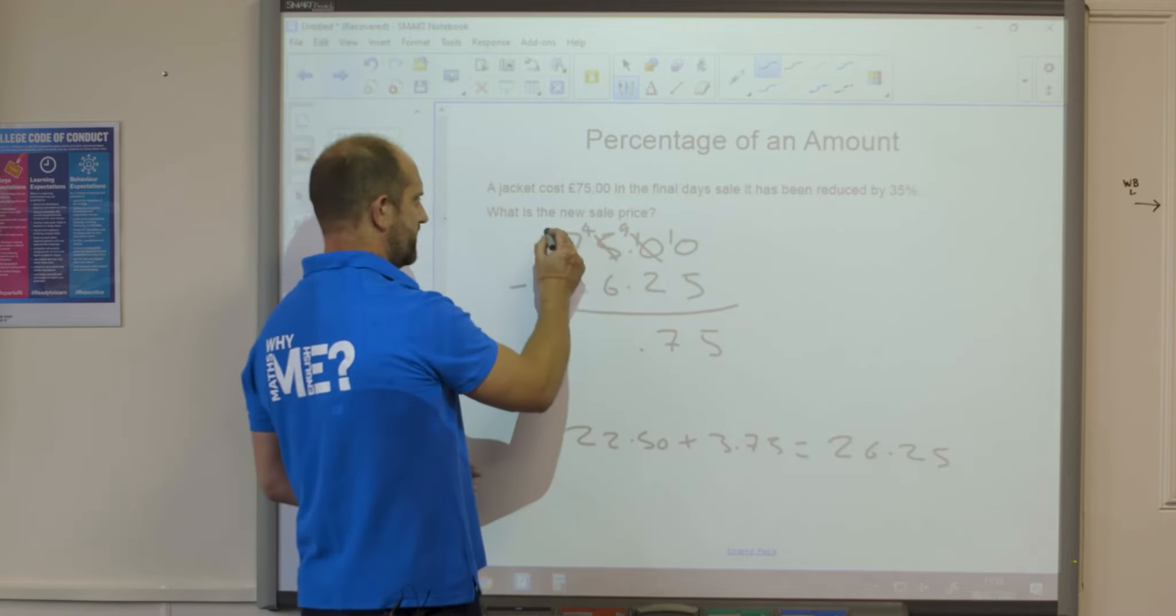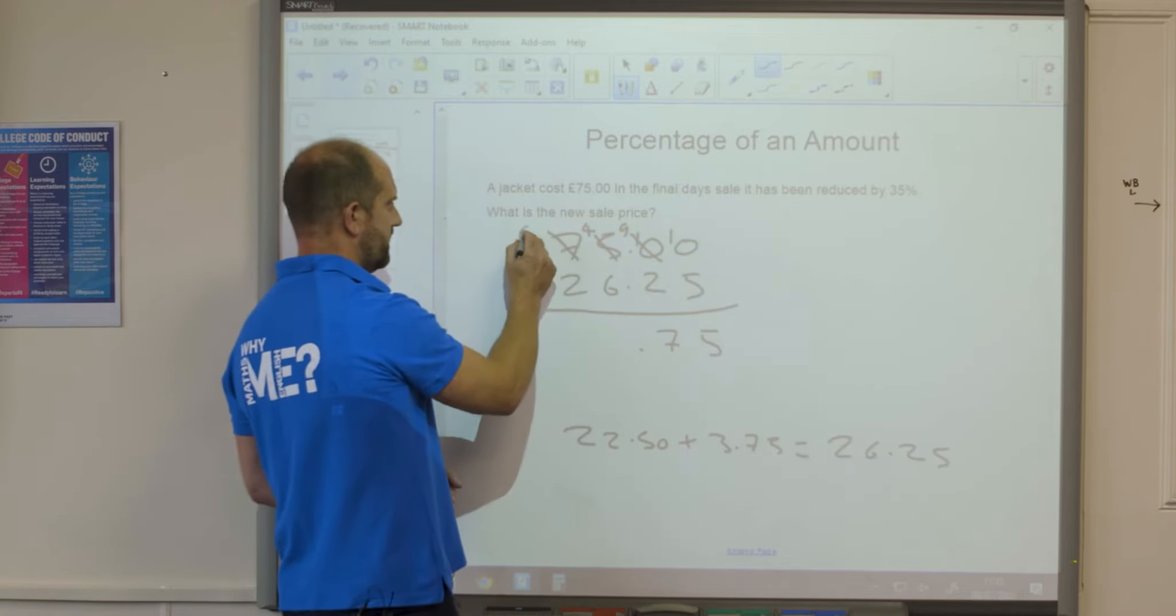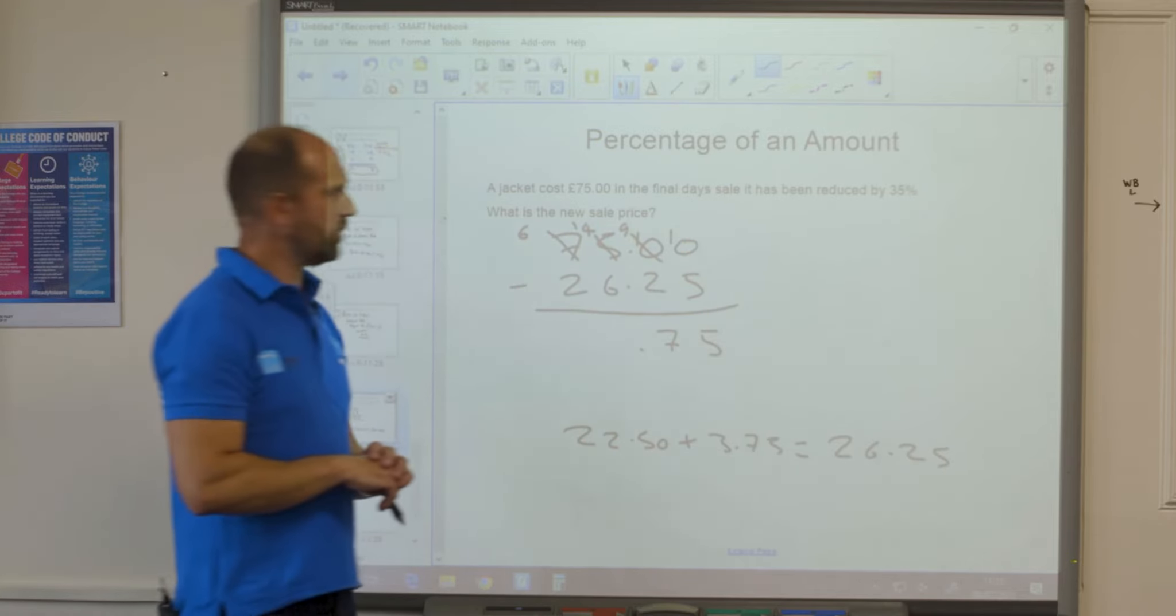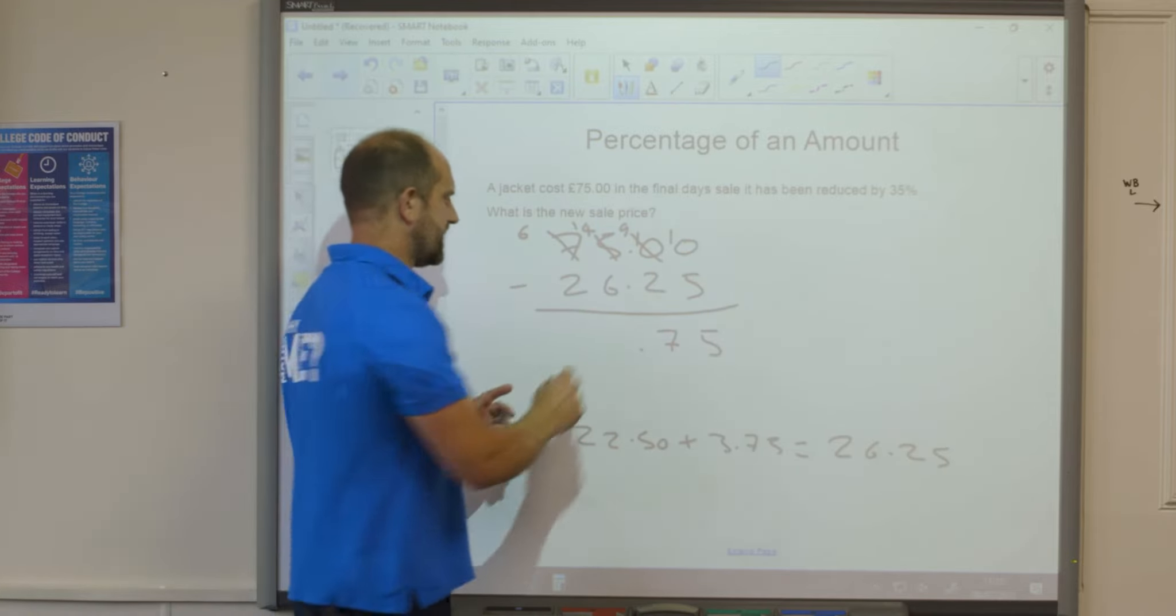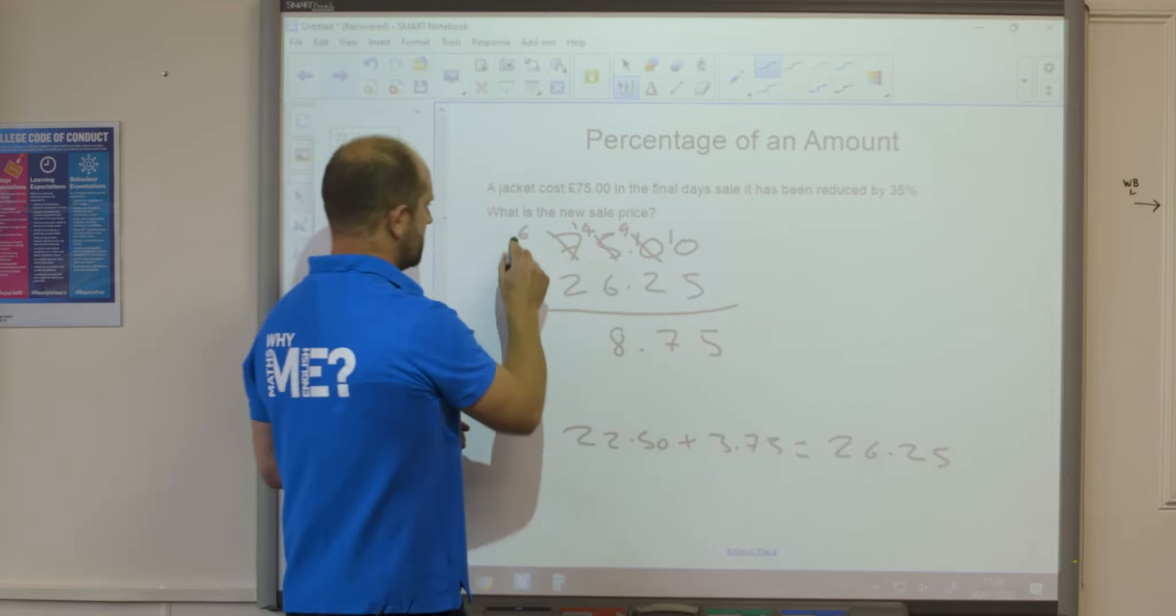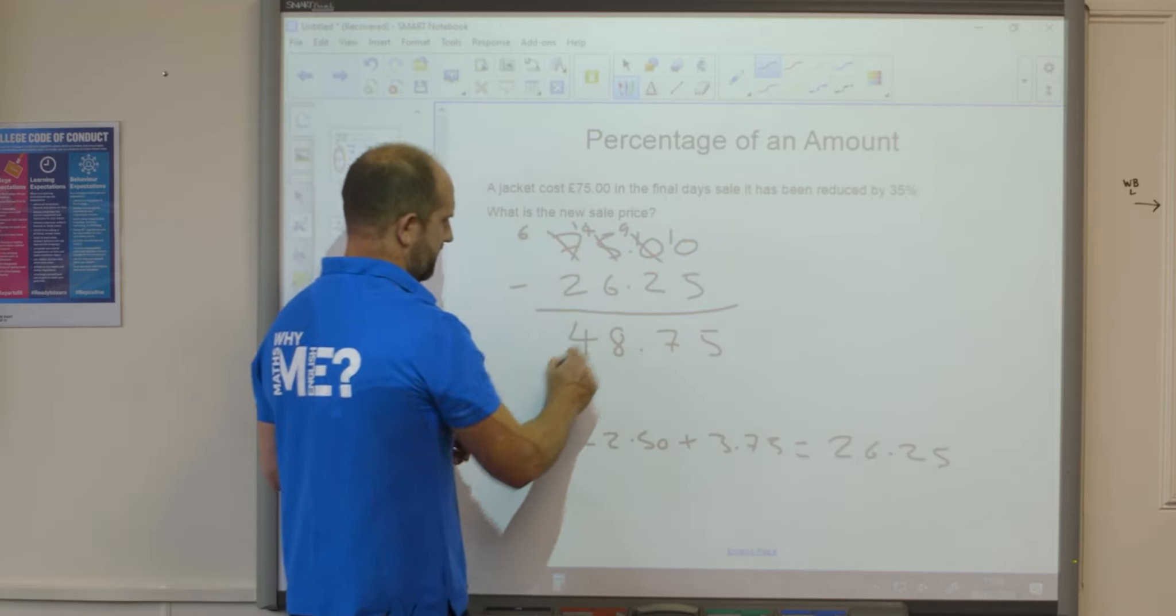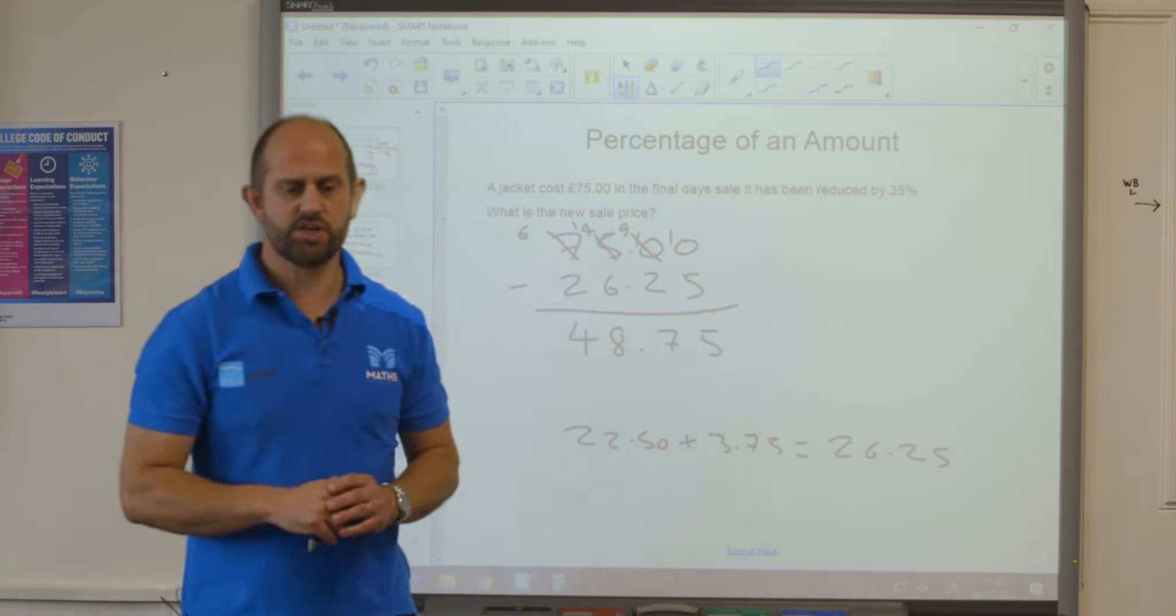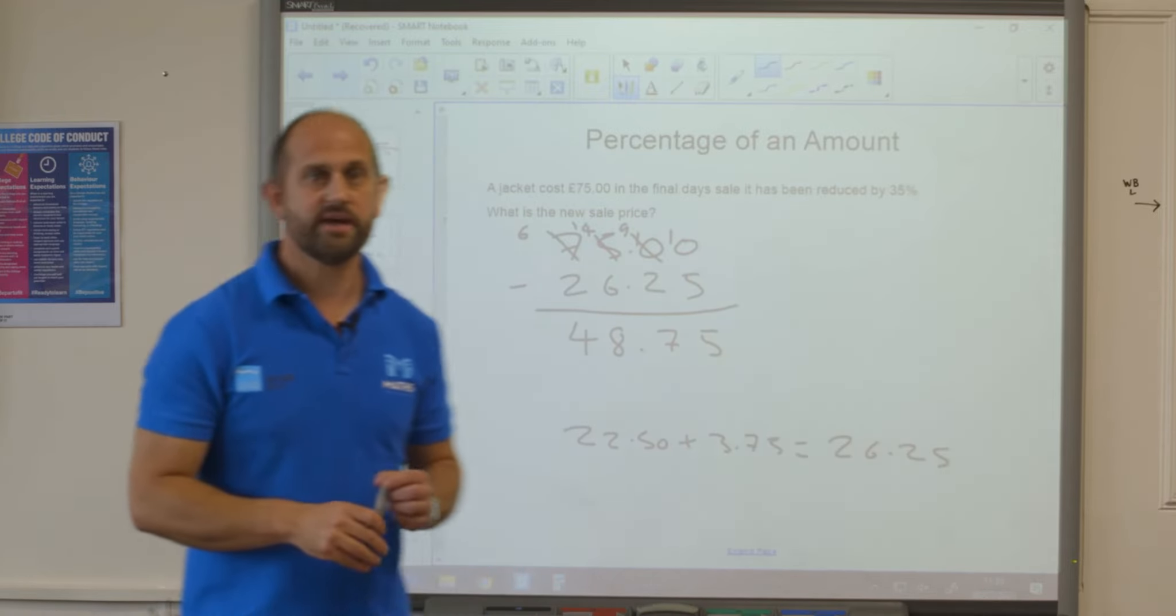4 take 6, that can't be done. So I'm going to borrow from the 7. That becomes a 6, that becomes 14. So 14 take away 6, that is 8. 6 take 2, 4. 48 pounds 75 then is the new cost of my jacket.